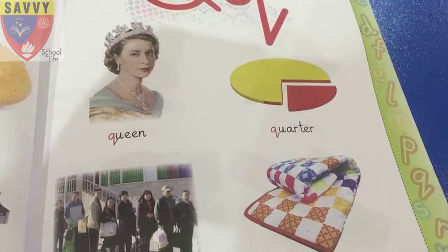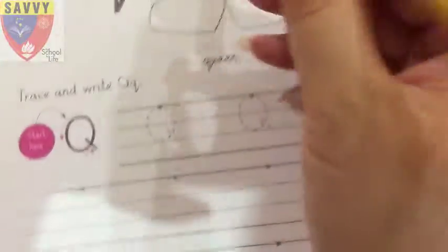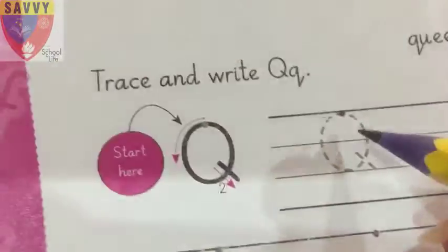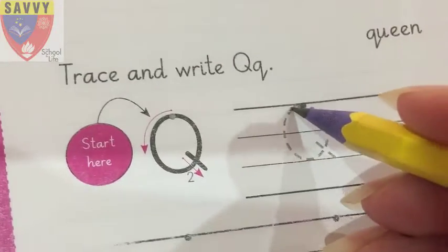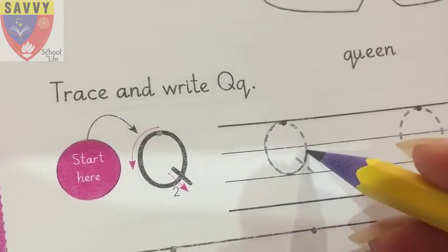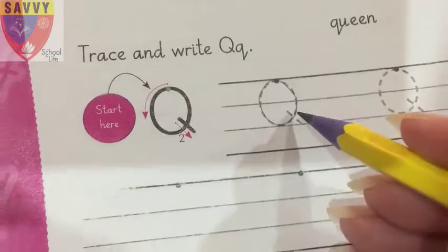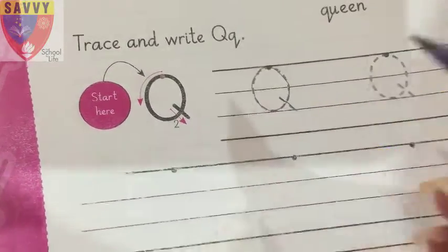Now open your English word book. Letter Q. Draw a circle like this. Then draw a small line at the bottom. Understand? Capital Q.